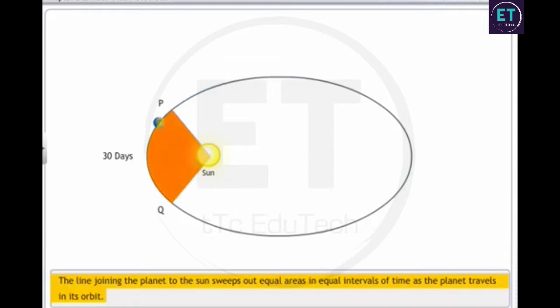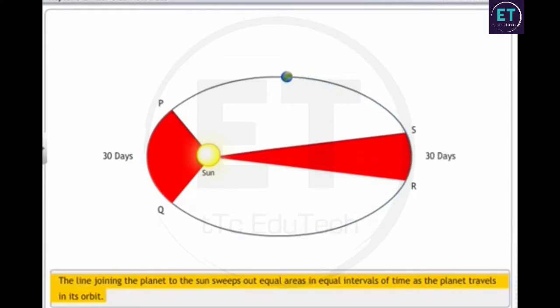enclose a roughly triangular area. This area is equal to the area covered for any 30-day duration during the year, regardless of the earth's position in its orbit. Thus, as shown, area A1 equals area A2.